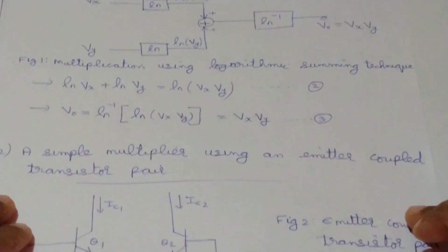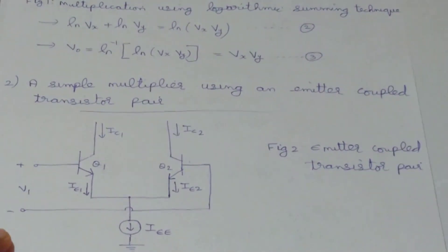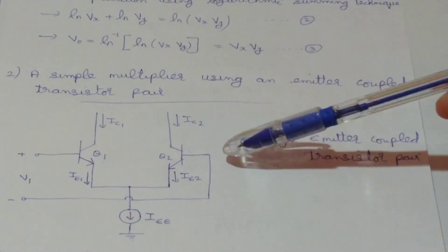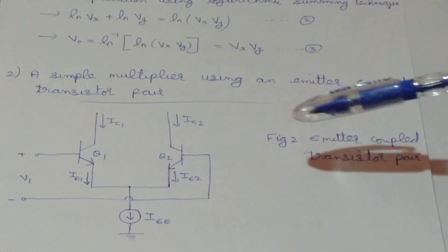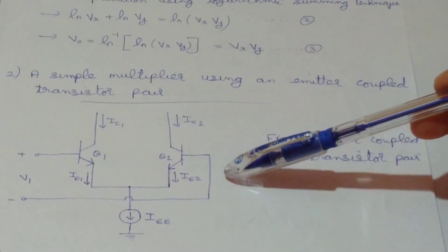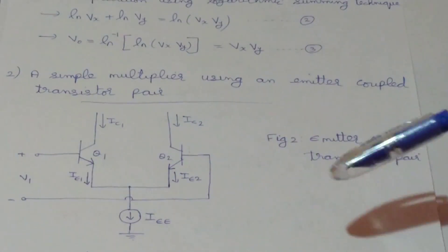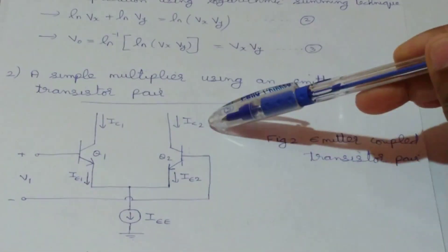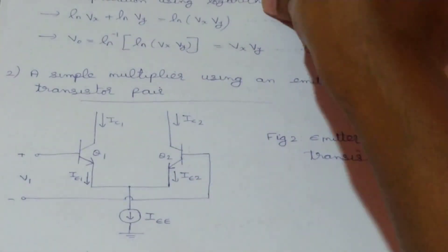Now consider the second method, which is a simple multiplier using an emitter coupled transistor pair. This is the circuit of an emitter coupled transistor pair. To understand how this circuit works as a multiplier, we first need to derive the equations for output currents IC1 and IC2 in terms of the differential input V1.